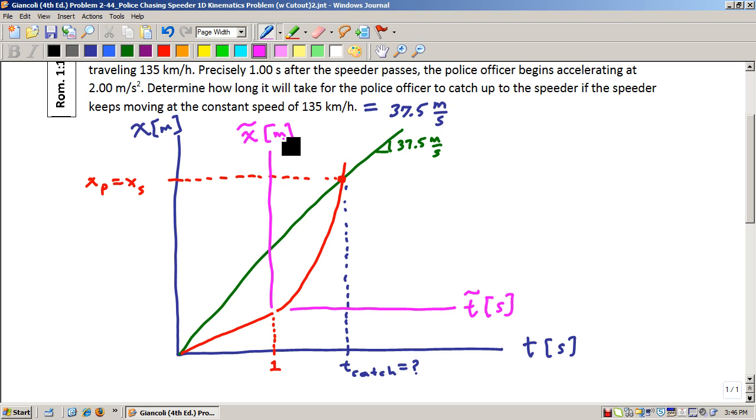Having done that, I can now come up with the equation of this straight line in this new coordinate system. In particular, X-tilde of the speeder, as a function of T-tilde time, is equal to the equation of a straight line, so it's the slope-intercept form, and the slope in this case is the 37 and a half times the time, T-tilde,